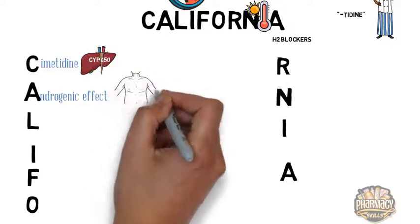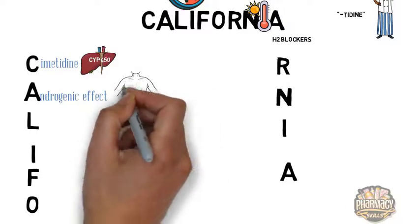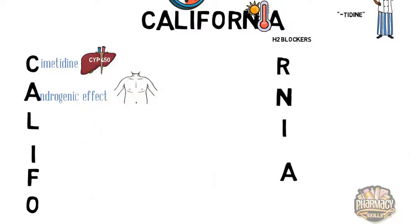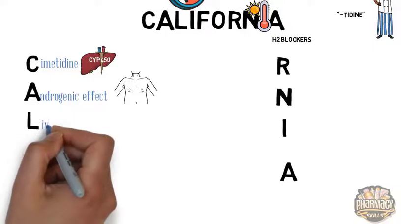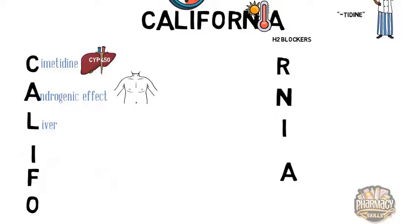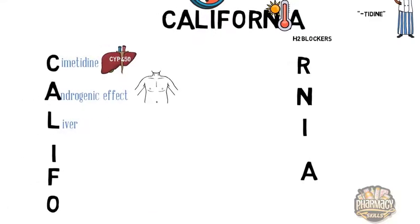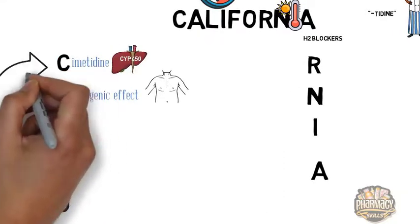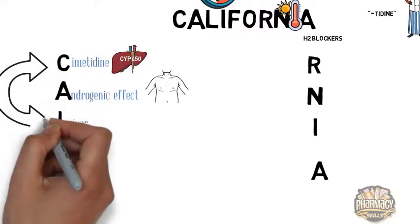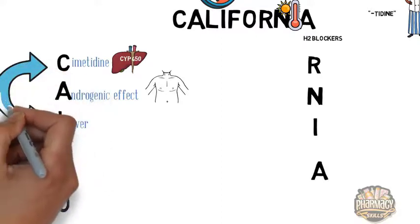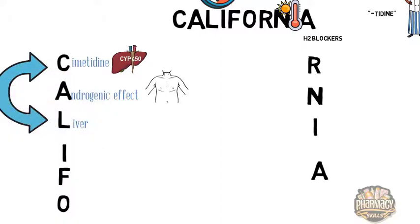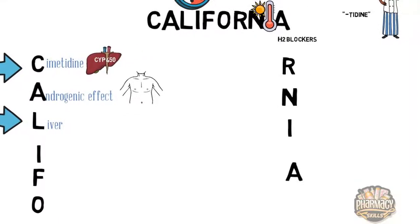That rare side effect of gynecomastia is an exam favourite. L stands for liver — liver should remind us of CYP450 interactions, which are an issue when inhibiting enzymes. If you impede liver enzymes, those enzymes cannot process other drugs, which could raise those other drugs' levels in the body.